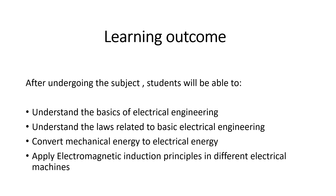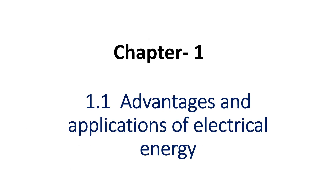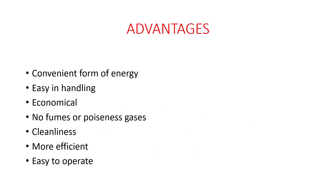We will start with the first chapter, which is introduction, in which we will study about the advantages and applications of electrical energy. The first advantage is that it is the most convenient form of energy. We can say that electricity is a very convenient form of energy as it can be converted into other forms of energy. For example, if we want to convert electrical energy to heat energy, we can pass electric current through a wire of high resistance.